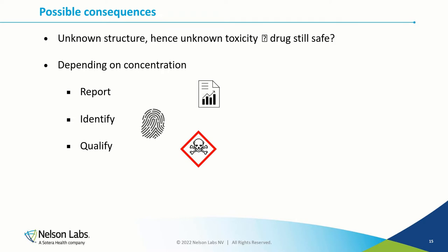The core issue is the toxicological uncertainty about that new impurity, because patient safety is no longer assured. An impurity can always be potentially toxic, who knows even mutagenic. Depending on the concentration relative to the active pharmaceutical ingredient, the API, and whether it's detected in drug substance or drug product, thresholds apply for reporting the impurity to the authorities, or whether the impurity needs to be identified or even qualified.